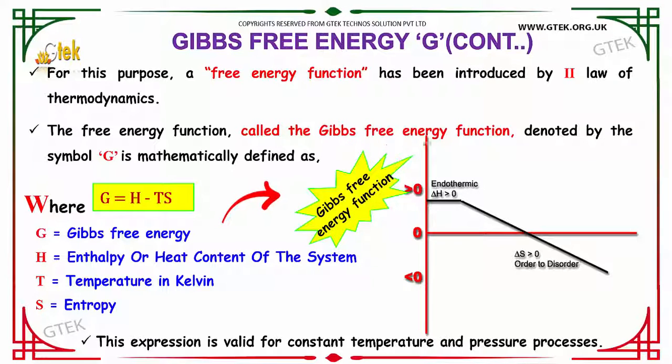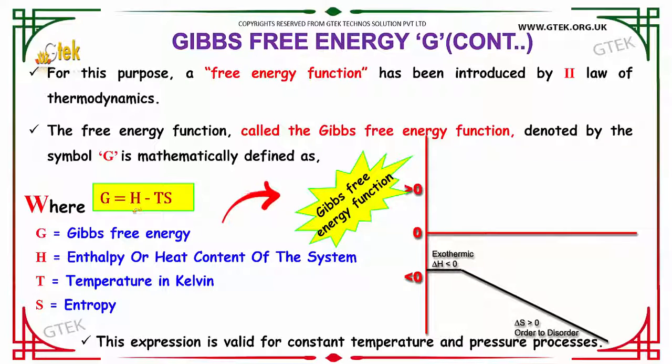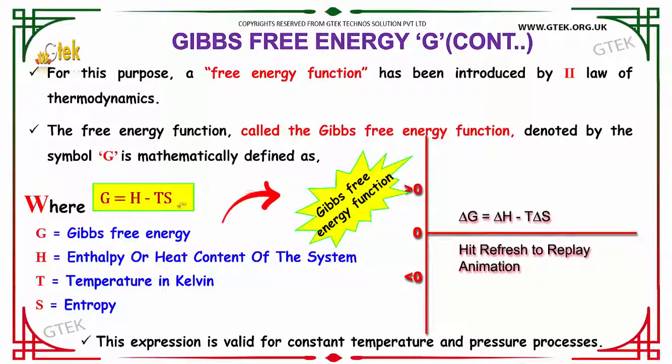The free energy function is called the Gibbs free energy function, denoted by the symbol G. Mathematically, G equals H minus T times S, where G is Gibbs free energy, H is enthalpy or heat content of the system, T is temperature in Kelvin, and S is entropy. This expression is valid for constant temperature and pressure processes.